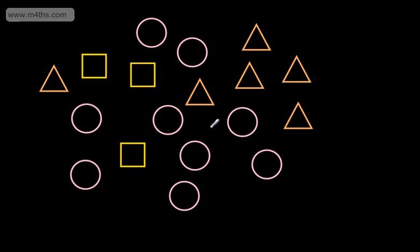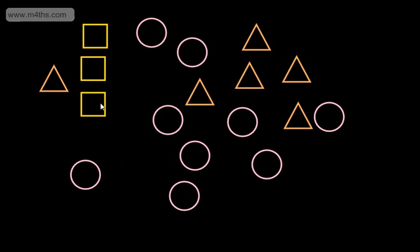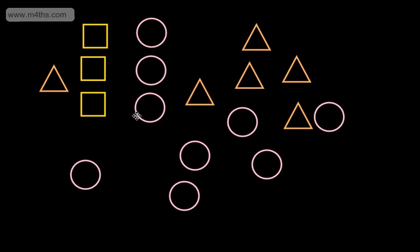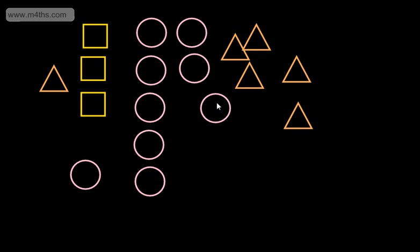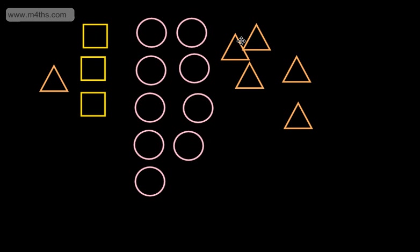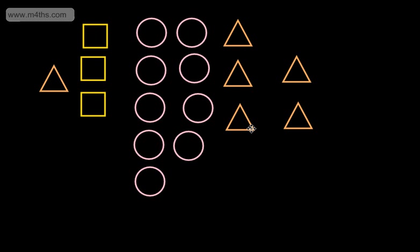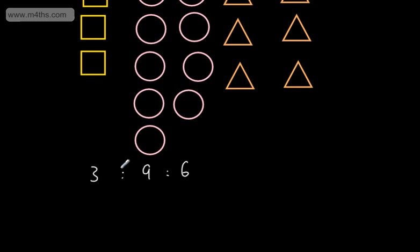Let's look at another one. This time we've got lots more objects. Starting with the squares, let's put those together — we've got three of those. Let's put the circles together — collecting them all up, that looks like we've got nine. And then the triangles — we have six of those. So if I wanted to write a ratio for the squares to circles to triangles, we have a three to nine to six ratio. We can simplify this by dividing each by the highest common factor, which is three, giving one to three to two.